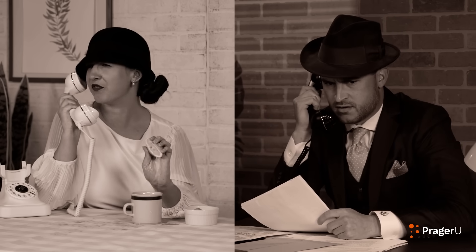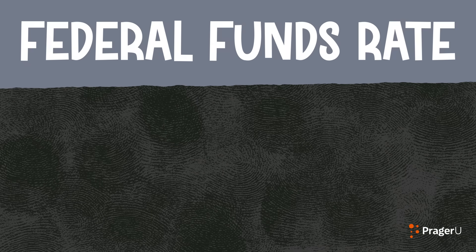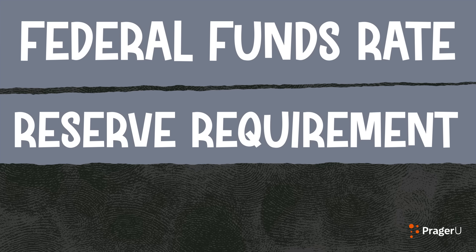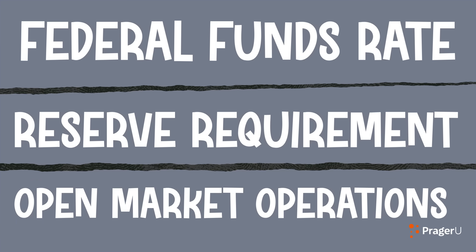But what does the Fed actually do? The question was obvious, but the answer — still a mystery. So like a bloodhound on the trail, I kept hunting. That's when things started to fall into place. Three things seemed to stand out, like three blind mice in a maze: the Federal Funds Rate, the Reserve Requirement, and Open Market Operations.